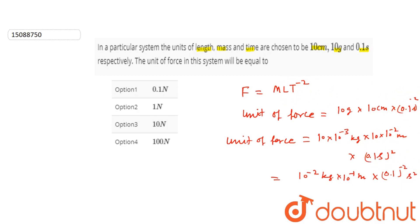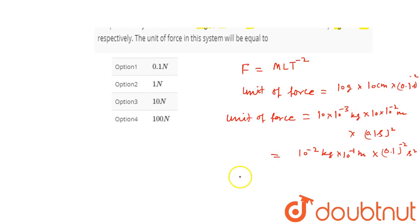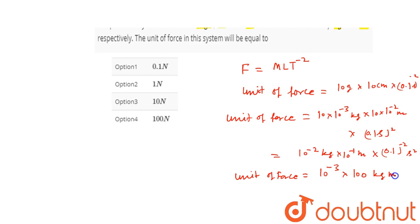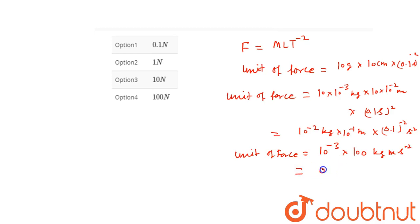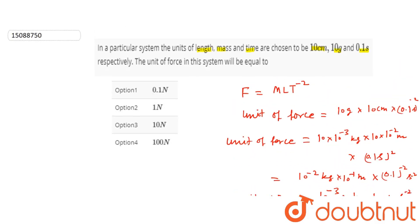As we have seen from the dimensional analysis MLT⁻², the unit of force will be equals to 10 to the power minus 3 into 0.1 to the power minus 2, that is 100, into kg·m per second squared. So it is 0.1 N. The unit of this system is 0.1 N, which matches the first option, so it is the correct option.